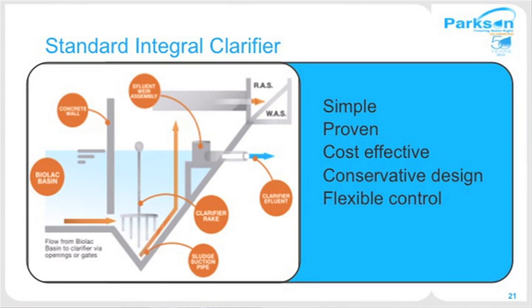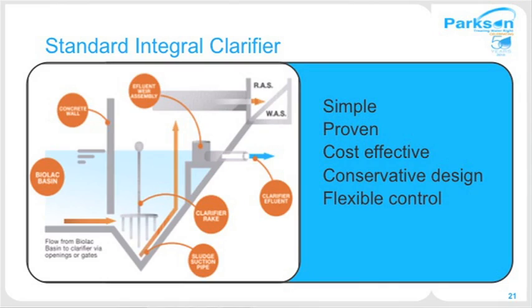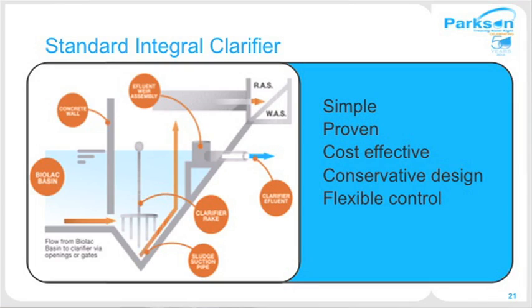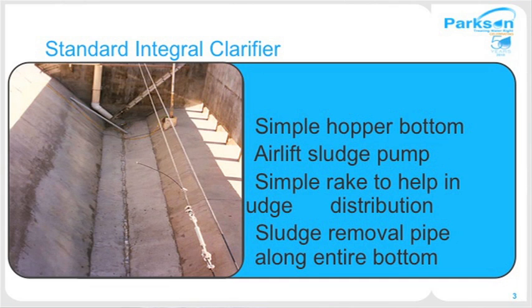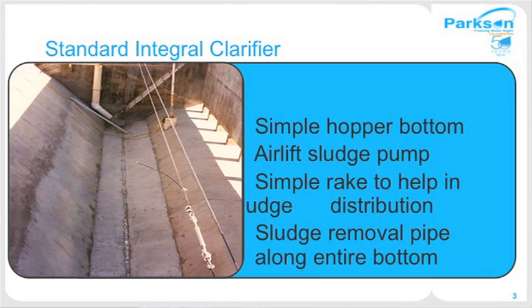Here's a closer picture of the clarifier components. One key component is the rake assembly, which moves back and forth along the length of the clarifier to keep the sludge blanket evenly distributed at the bottom, ensuring consistent sludge quality throughout the suction pipe length. At the bottom of the hopper you'll see the sludge suction pipe, grouted in with openings sized and engineered for consistent velocity throughout the pipe. The rake assembly cables and the airlift rise assembly are also shown.